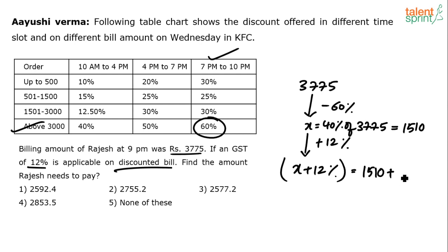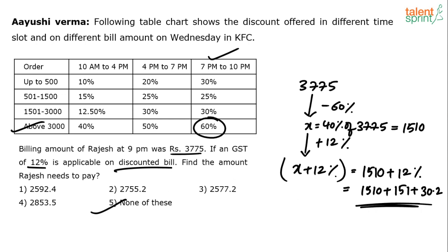12% of 1510: 10% is 151, 2% is 30.2, so 12% ≈ 181.2, giving approximately 1691. None of the options are in the range of 1800, so option 5 — none of these — is the answer.